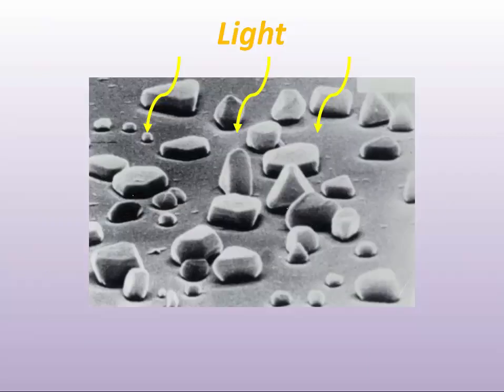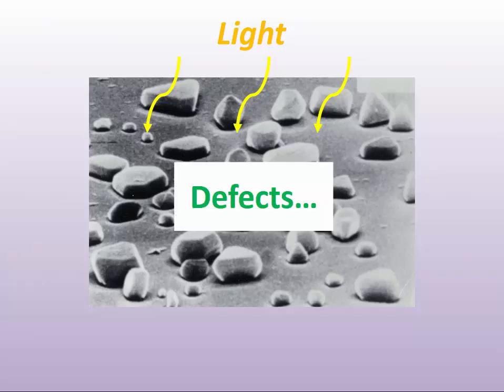The ability for a silver halide grain to absorb light, and for us to be able to develop an image recorded in a silver halide crystal, comes from the fact that the crystal is not perfect. It contains defects. The most important class of defect required for photography to work is known as the point defect, or a Frenkel defect.